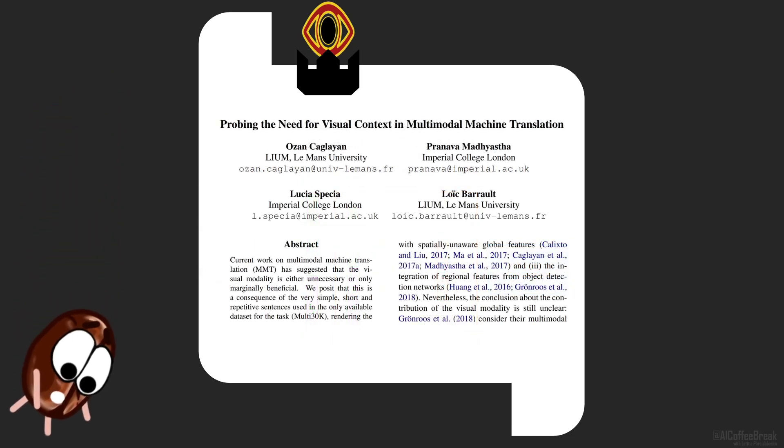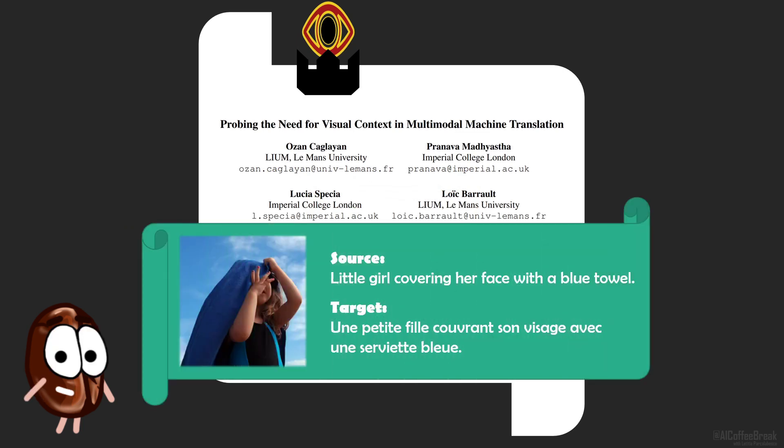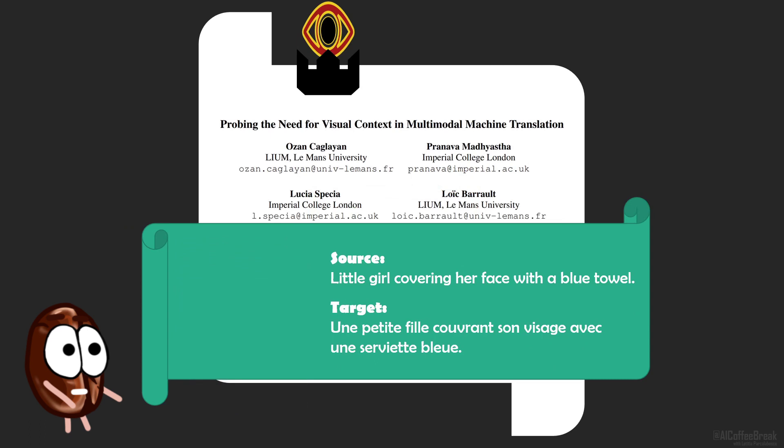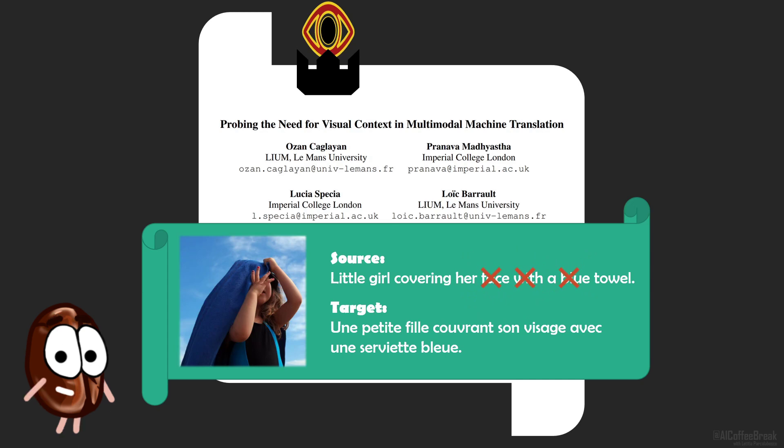Another study indicating that multimodal models ignore one modality was conducted on multimodal machine translation, where the model has to translate from source to target language, but this time with the help of images. Only that the model performance on translating image captions did not differ convincingly when having access to the image compared to not looking at the image at all. Only when many tokens from the text were deleted and the text barely contained some information for the model to rely on, the multimodal model started to focus on the image.